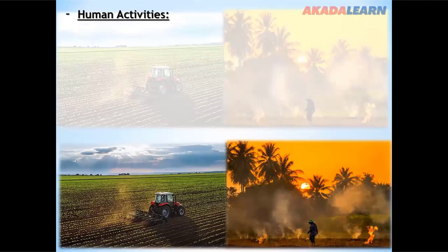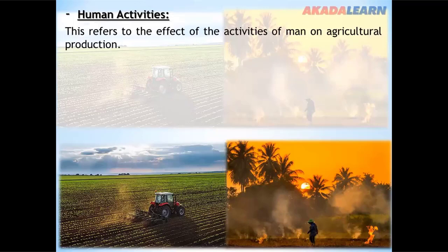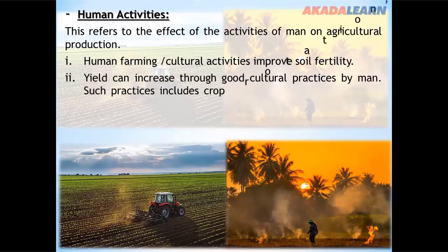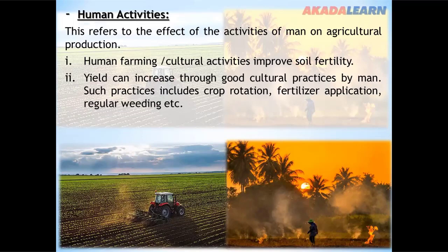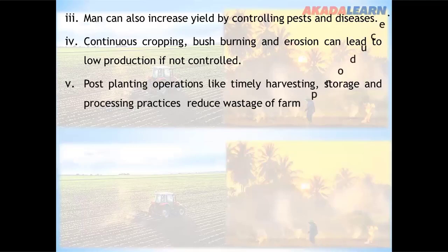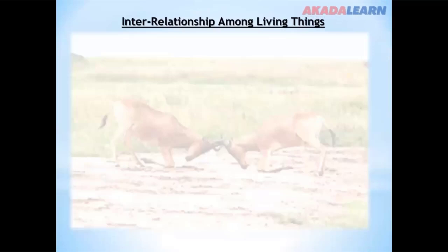Human activities refer to the effect of the activities of man on agricultural production. Human farming or cultural activities improve fertility. Yield can increase through good cultural practices by man, such as crop rotation, fertilizer application, and regular weeding. Man can also increase yield by controlling pests and diseases. Continuous cropping, bush burning, and erosion can lead to low production if not controlled. Post-planting operations like harvesting, storage, and processing practices reduce wastage of farm produce.